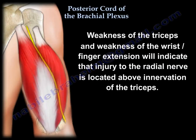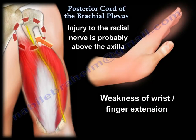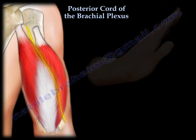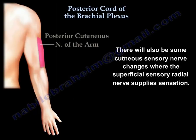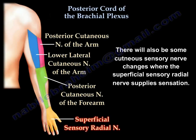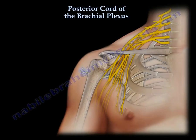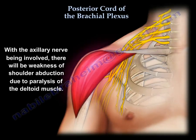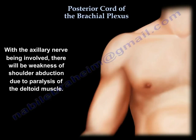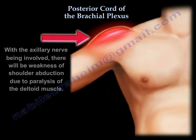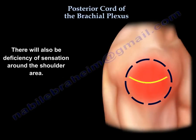Weakness of the triceps, wrist extension, and finger extension indicates that the radial nerve is injured above the innervation of the triceps — probably injured in the axilla or above. This is also accompanied by cutaneous sensory changes, particularly at the dorsolateral hand where the superficial sensory radial nerve provides sensation. The axillary nerve will cause weakness of abduction due to deltoid paralysis and also produces sensory deficiency around the shoulder area.